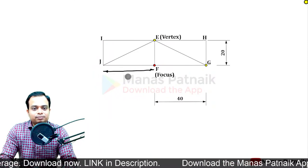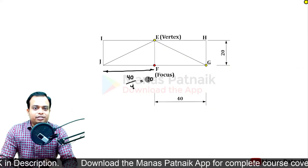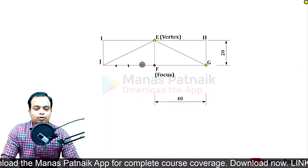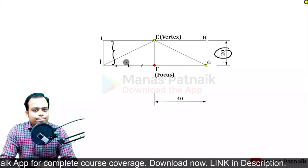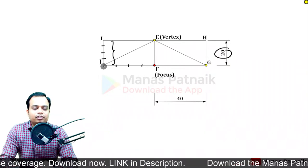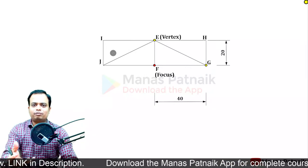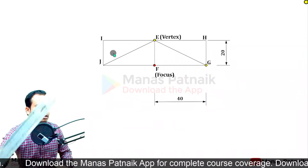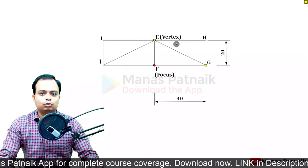This side happens to be 40 millimeters, so 40 divided by 4 gives each division equal to 10 millimeters. This side over here is equal to 20, so divisions are 5, 10, 15, 20. Simply use a scale - you don't have to use the line division technique. With a scale you can do all of this very easily.